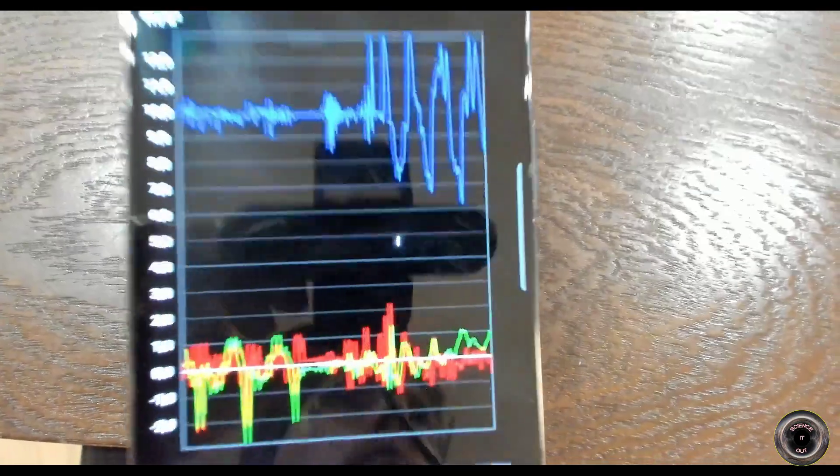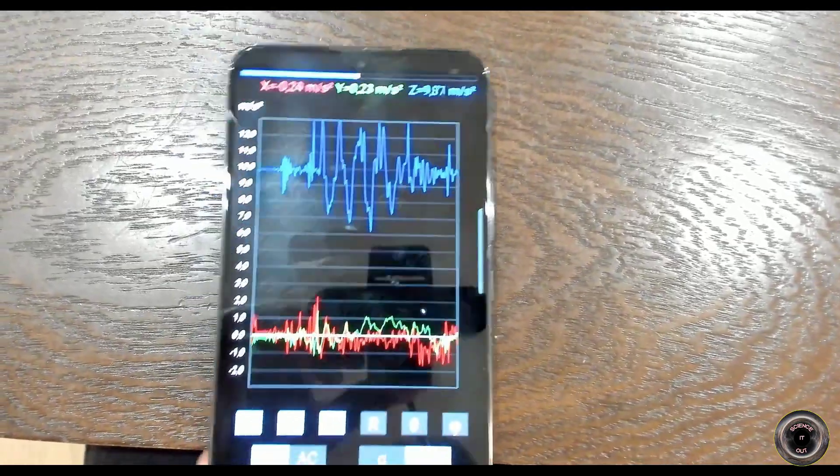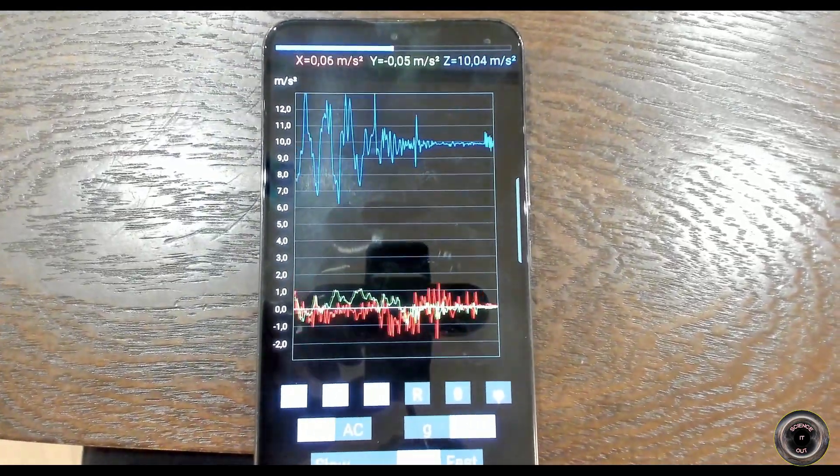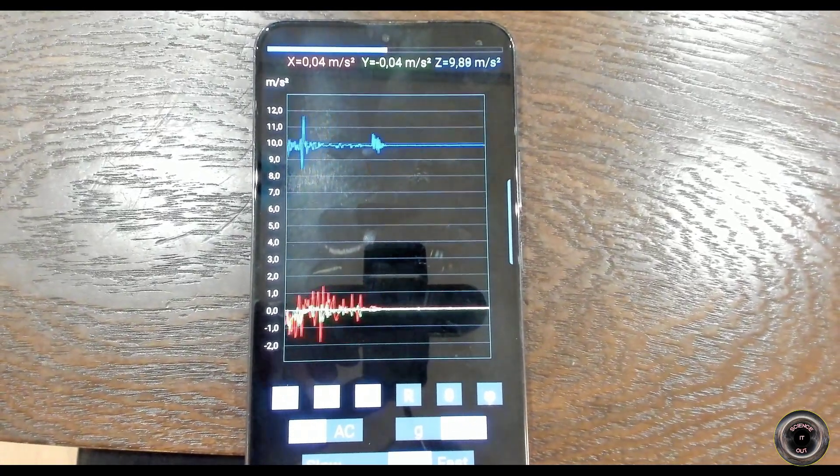Here I'm moving the phone to show which axis is which on the screen. So your smartphone believes that you are constantly accelerating upwards. Why?